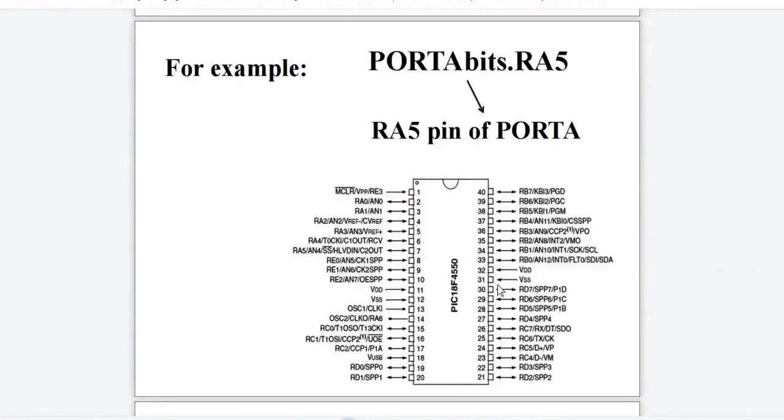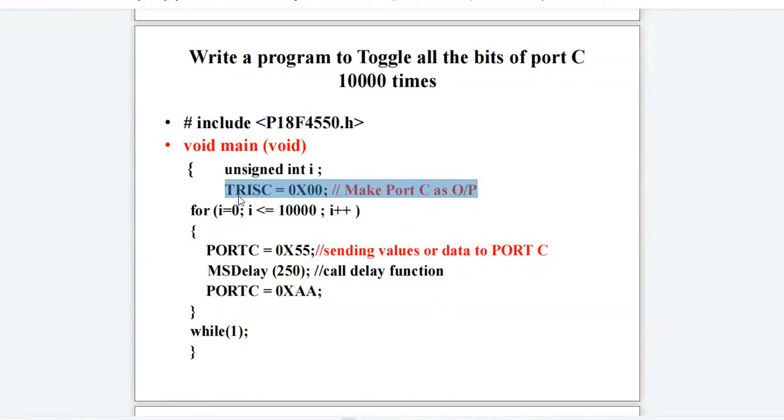There are 5 ports in PIC18F controller: port A, B, C, D and E. In earlier programs, we have written the instruction TRISC equals to 0x00, which means we are making the port C as output port.